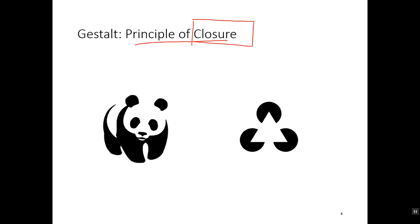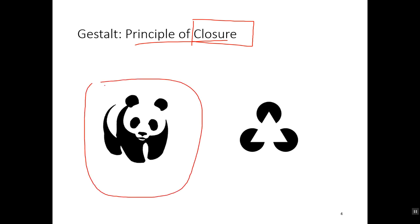One of the major principles of gestalt psychology is the idea of closure, or closure of figures — that's actually where the term gestalt comes from. Gestalt translated into English means figure. The principle of closure states that we tend to want to close open figures. We see an image of a panda here, but notice that it's not finished. Even though it's not a finished image, our mind's eye more or less finishes it and makes it into a panda.